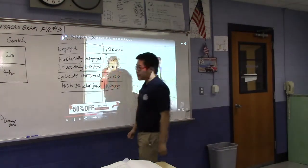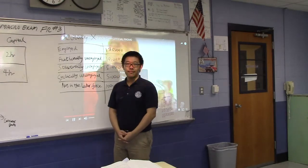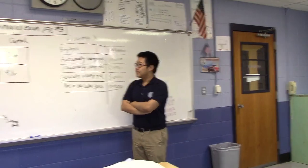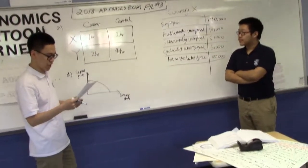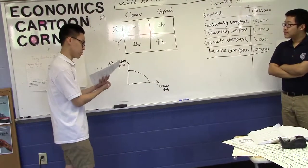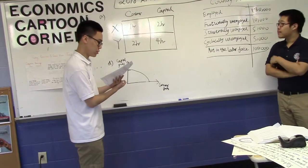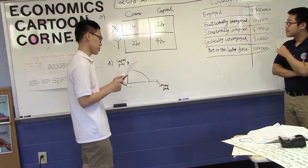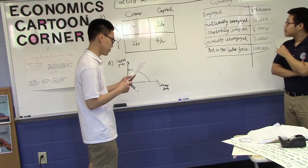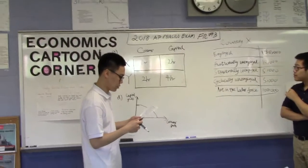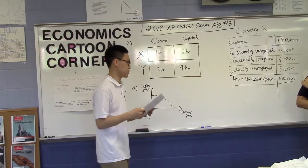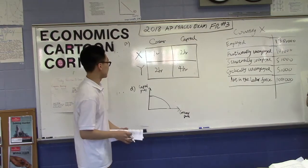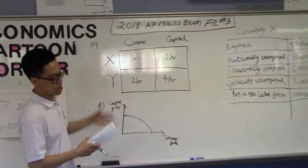All right, so for our question, countries face trade-offs between producing consumer goods and producing capital goods. Country X takes one hour to produce a unit of consumer goods and two hours to produce a unit of capital goods. Country Y takes two hours to produce a unit of consumer goods and four hours to produce a unit of capital goods. Which country has a comparative advantage in the production of consumer goods? So this is the matrix for the production.